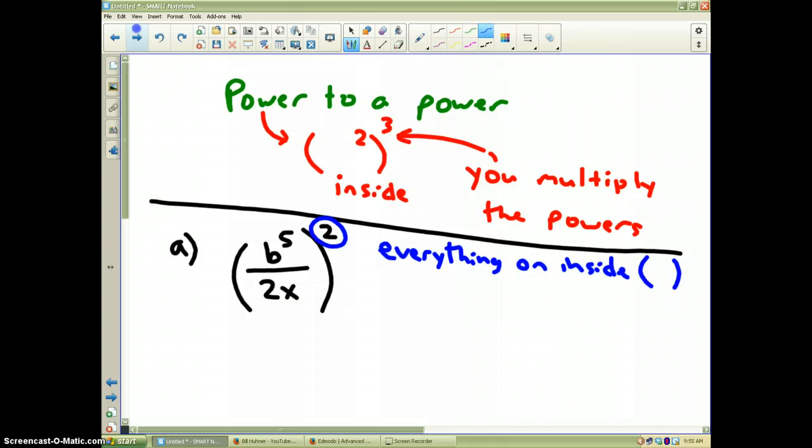So, therefore, let's deal with the numerator. What I just talked about up here, a power to a power, the 2, you multiply times the 5, and therefore, in the numerator, I will have b to the tenth power. That takes care of the top.